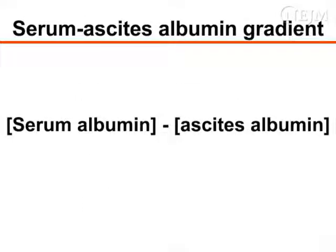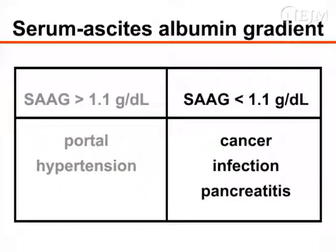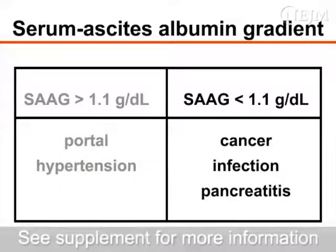Analysis of the fluid begins with the determination of the serum ascites albumin gradient. Gradients higher than 1.1 grams per deciliter indicate that the ascites is due to portal hypertension. Gradients less than 1.1 grams per deciliter suggest other causes, such as cancer, infection, or pancreatitis.